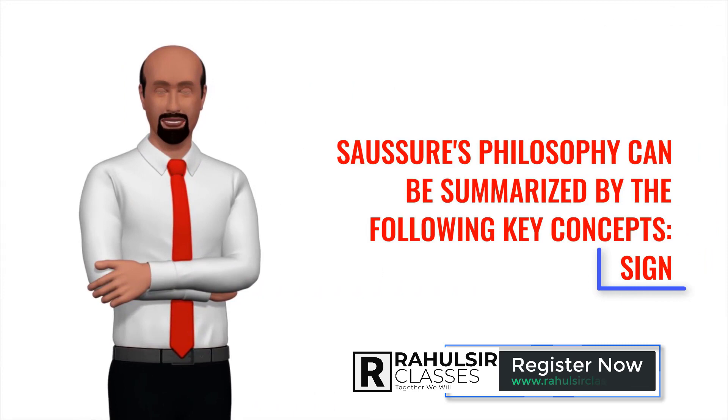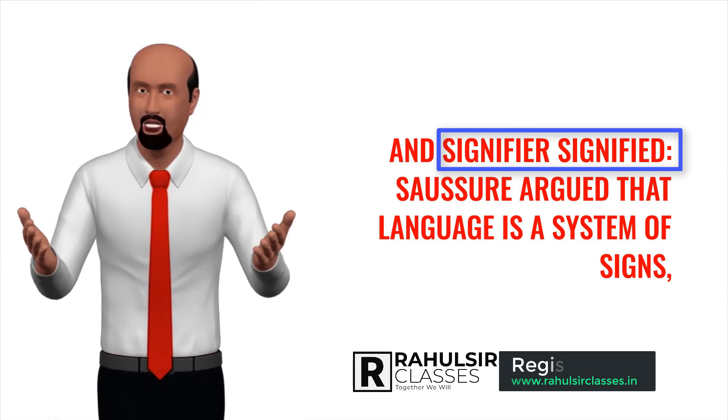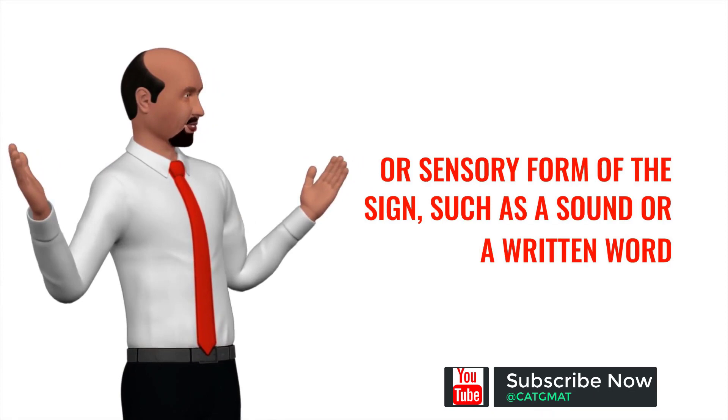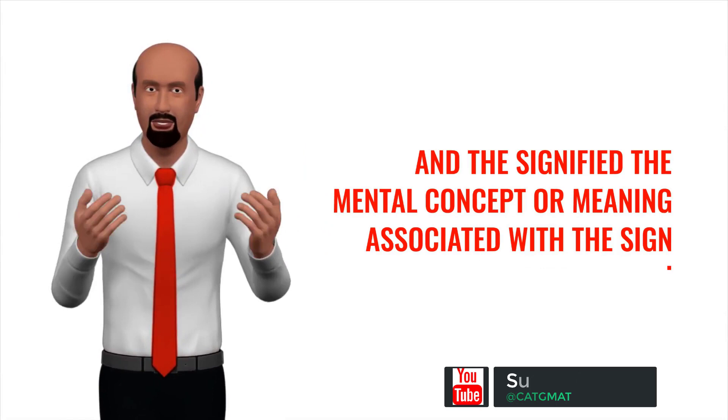Saussure's philosophy can be summarized by the following key concepts. Sign and signifier/signified: Saussure argued that language is a system of signs, where a sign is composed of two parts—the signifier, the physical or sensory form of the sign, such as a sound or a written word, and the signified, the mental concept or meaning associated with the sign.